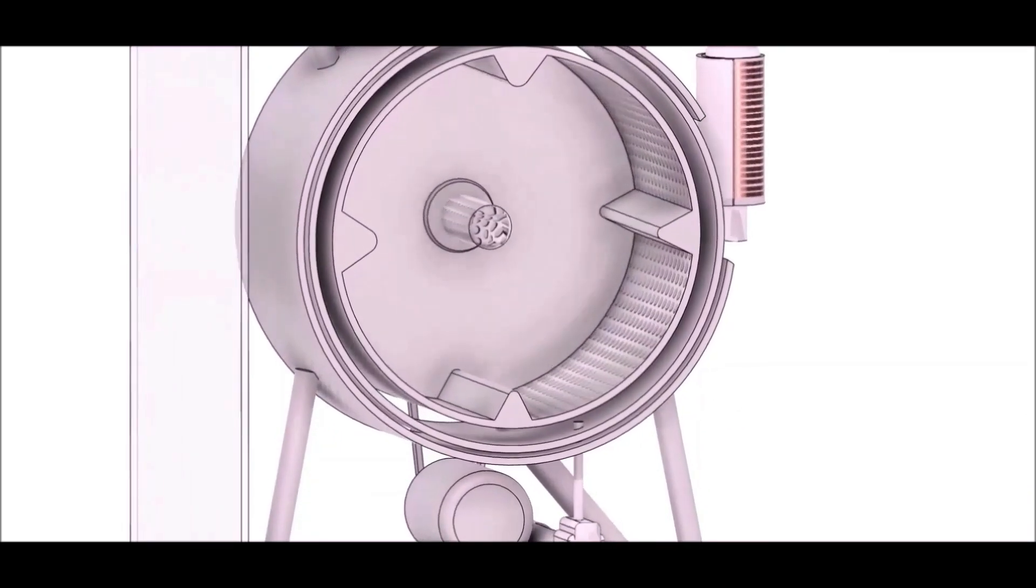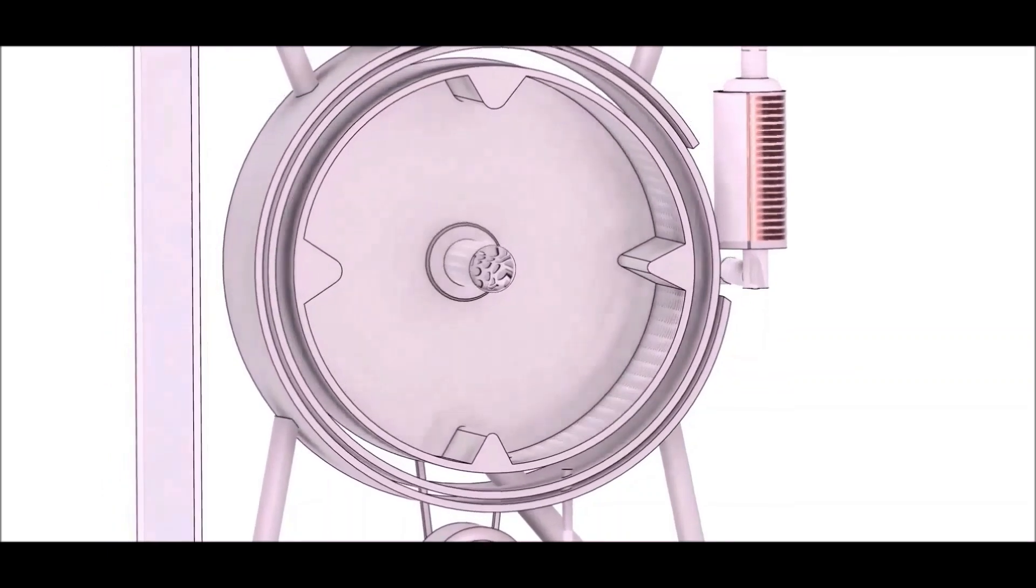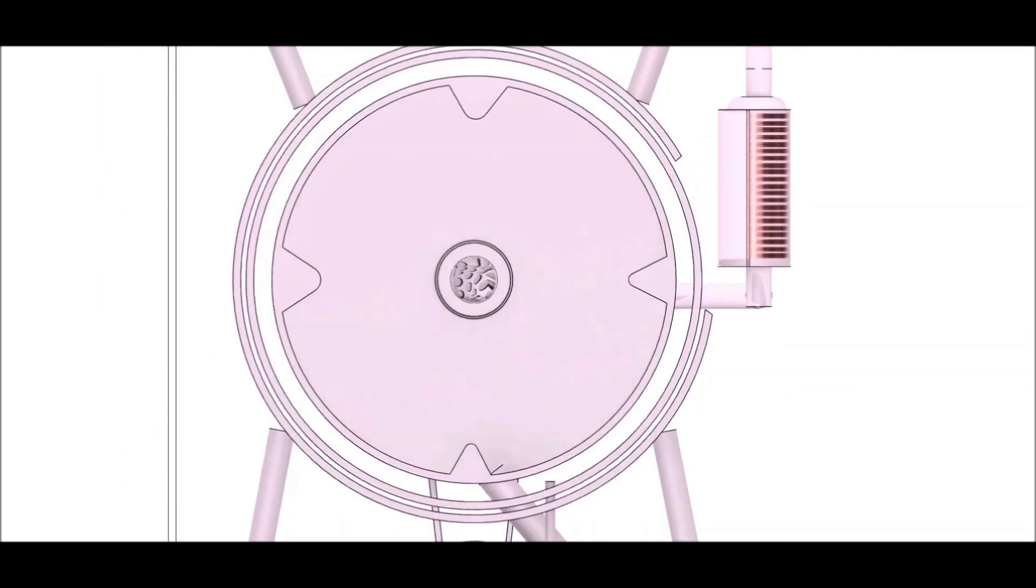When the drum of the machine reaches 500 rpm, the clothes will stick to the drum due to the centrifugal force. Meanwhile, a gap will form in the center.